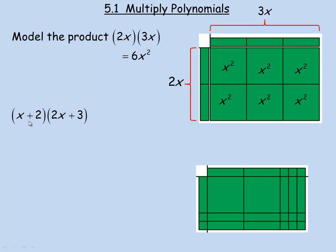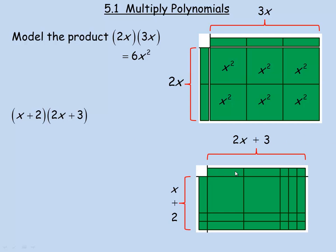To model multiplying x plus 2 by 2x plus 3, this dimension is going to be x plus 2. Each of these little tiny squares is meant to be a 1 by 1 square — 1 times 1 is 1, so that has an area of 1. So that dimension is x plus 2. Across the top we'll do 2x plus 3, so that's the 2x plus 1, 2, 3.